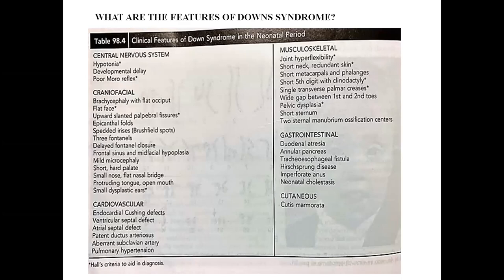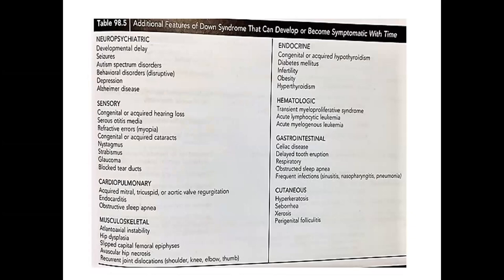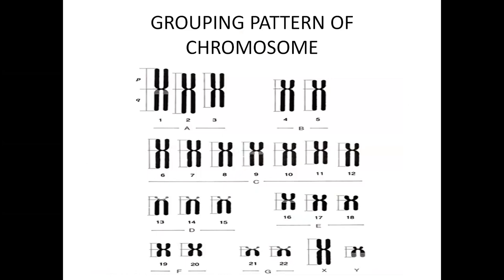Features of Down syndrome from Nelson — the ones marked with asterisk correspond to Hall's criteria. Know the systems and clinical features. Also know the associated features of Down syndrome. Chromosomes are normally grouped from A to G. In Down syndrome with meiotic non-disjunction it will be trisomy; in translocation it happens between D group chromosomes (acrocentric: 13, 14, 15) and G group (21, 22).